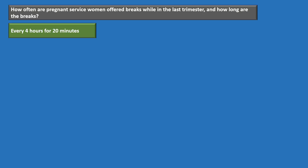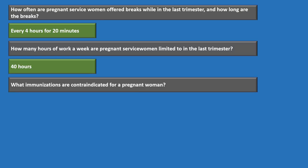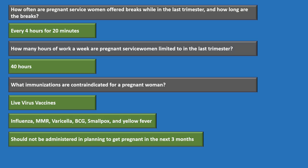Pregnant service women are limited to 40 hours of work per week in the last trimester. Immunizations contraindicated for pregnant service women are live vaccines, including live influenza, MMR, varicella, BCG, smallpox, and yellow fever. These vaccines should also not be administered to anyone planning to get pregnant in the next three months.